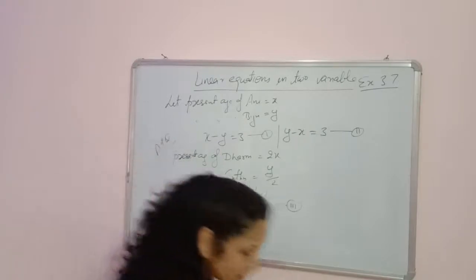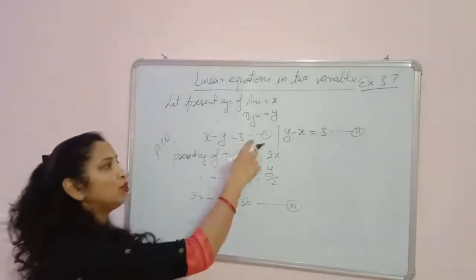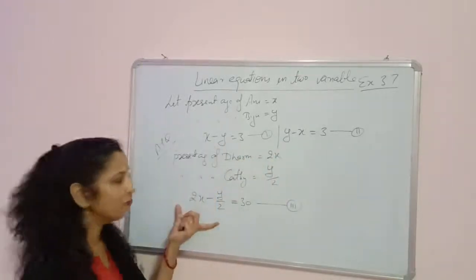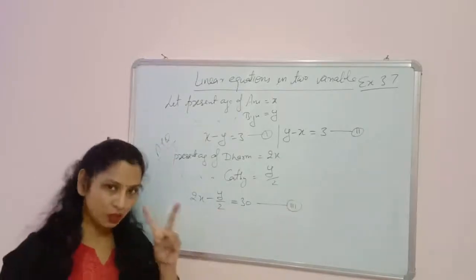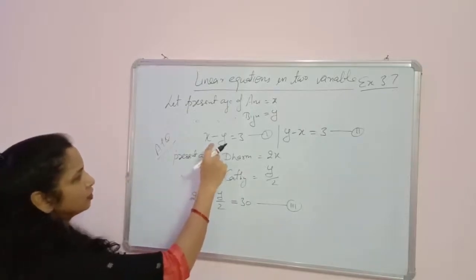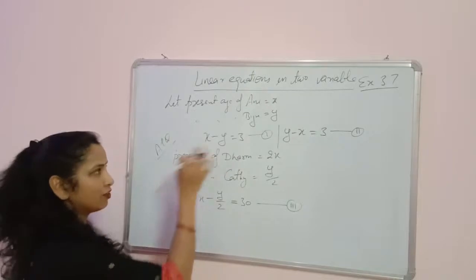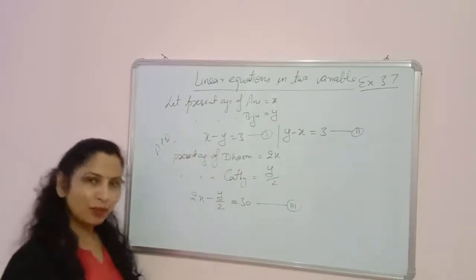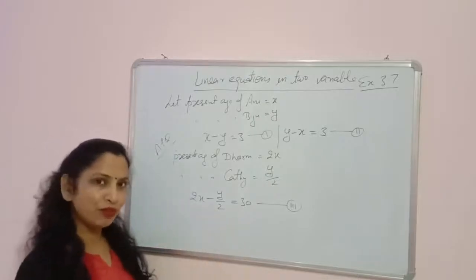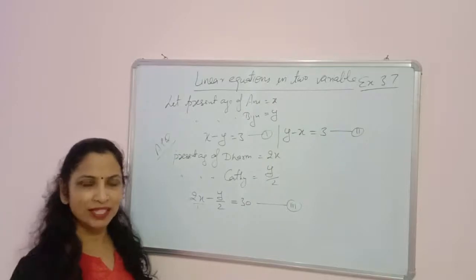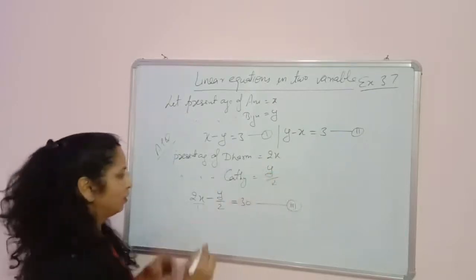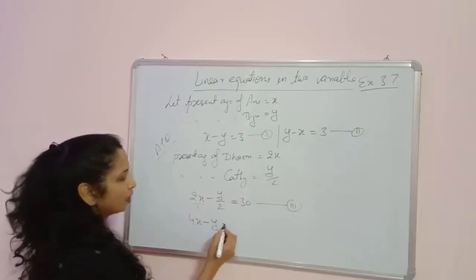Now, the most important thing: you have to solve equation 3 with both equation 1 and equation 2, giving two different answers. First, remove the denominator — remove the fraction. Take the LCM and multiply the denominator towards the RHS. So 2x minus y/2 equals 30 becomes 4x minus y equals 60.